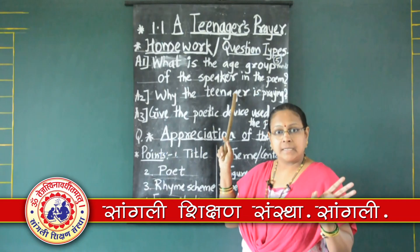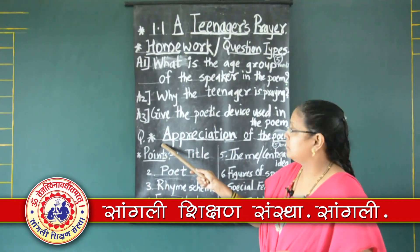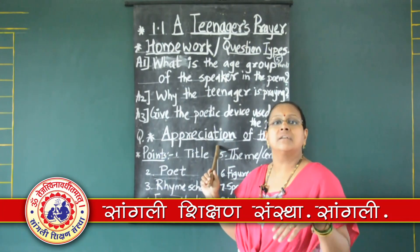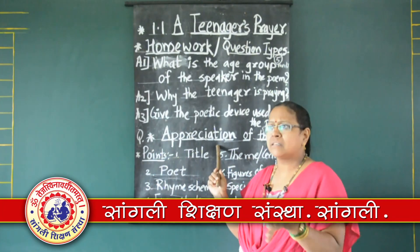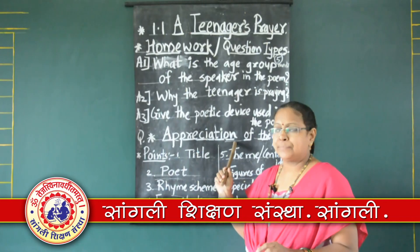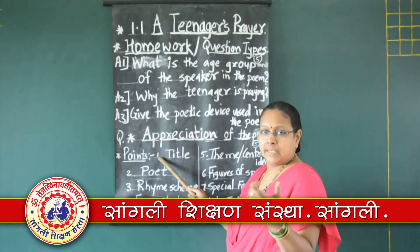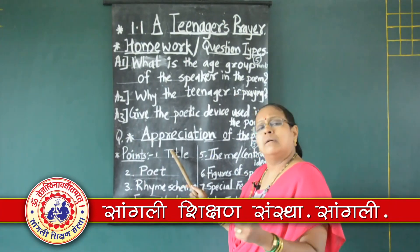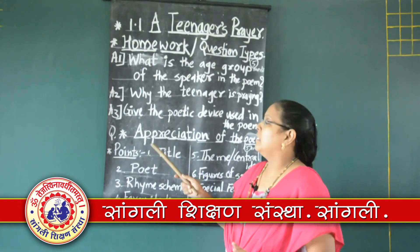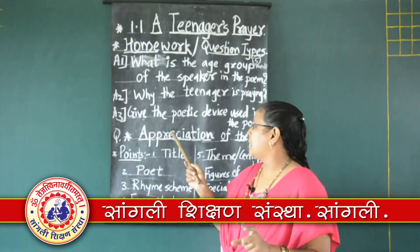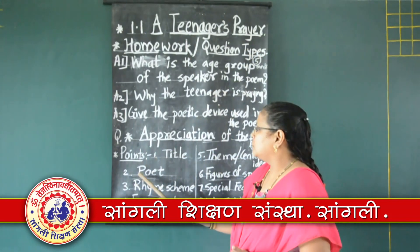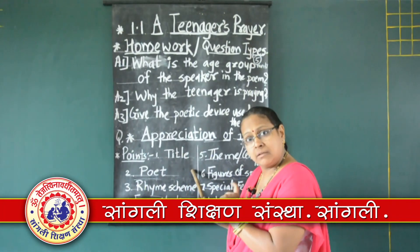The second very important question is the appreciation of the poem, again for five marks. You have to make much practice about this. The board will give the points and you just have to write them. First, write the heading: appreciation of the poem. Then the first point: title — that is 'A Teenager's Prayer', half mark. Poet's name — J. Morse — half mark. Then rhyme scheme — A, B, C, B — again half mark.